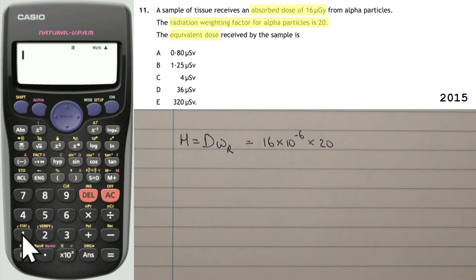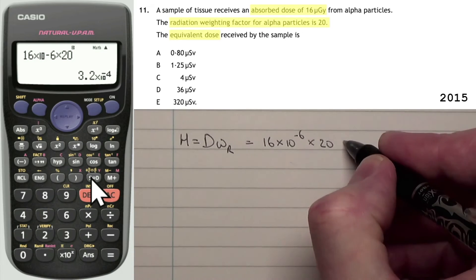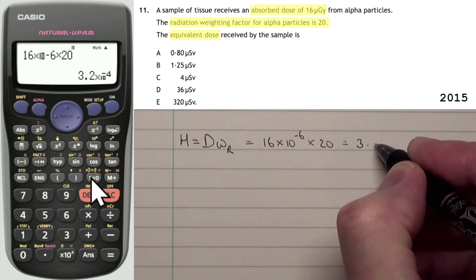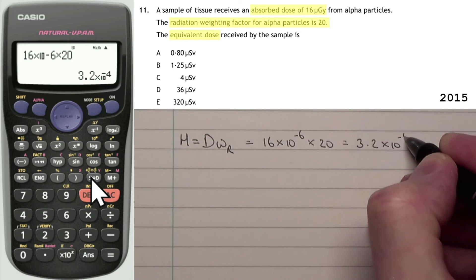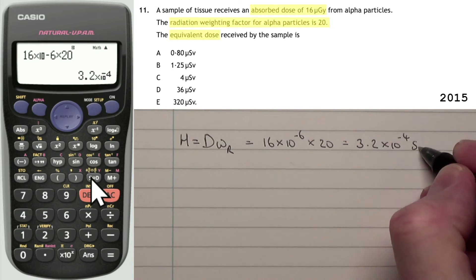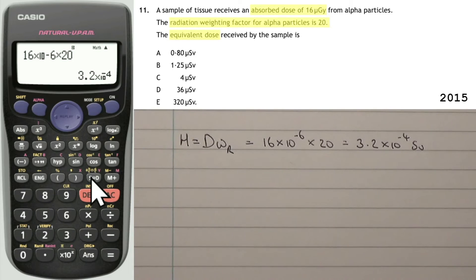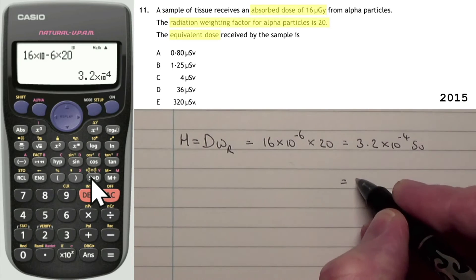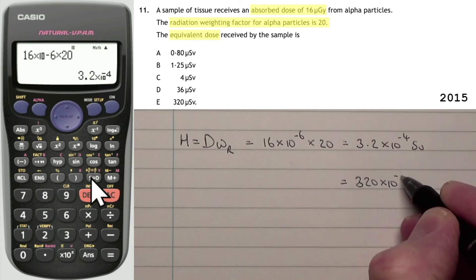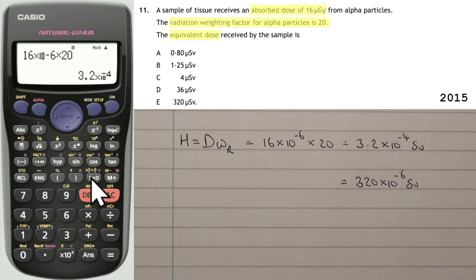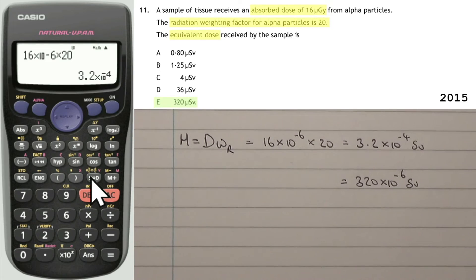So if we work that out, that should give us 16 times 10 to the minus 6. And if you're not 100% sure how to put these prefixes into your calculator, there's a video on that as well. Now that's not going to do, so we'll need to press the button SD, and that's giving us 3.2 times 10 to the minus 4. It would be enough in a written question to write an answer as 3.2 times 10 to the minus 4 sieverts. Hopefully you should know that 3.2 times 10 to the minus 4 is also equal to 320 times 10 to the minus 6 sieverts, in other words 320 micro sieverts. So the answer there actually is E.